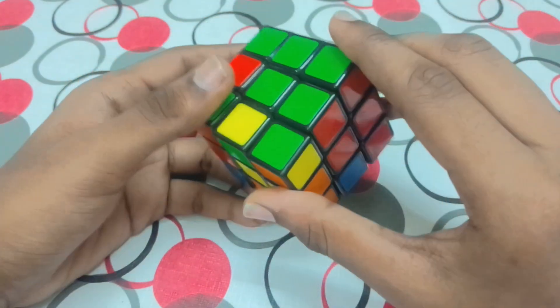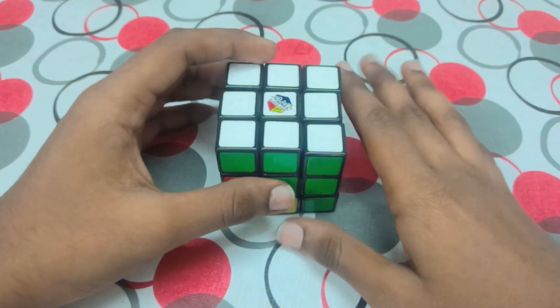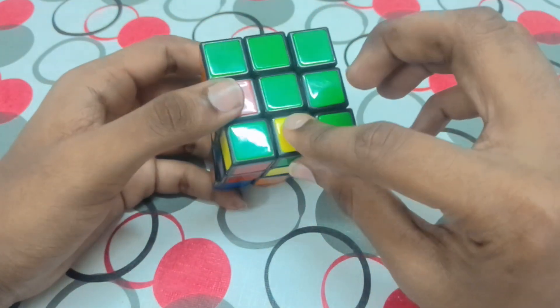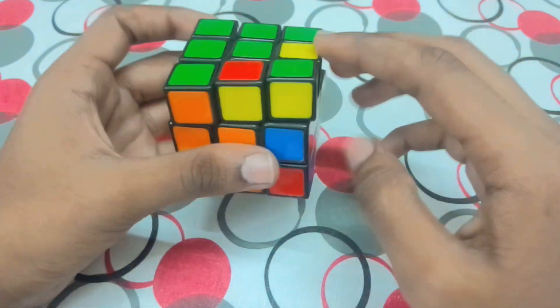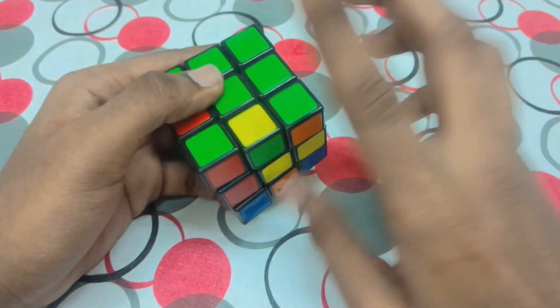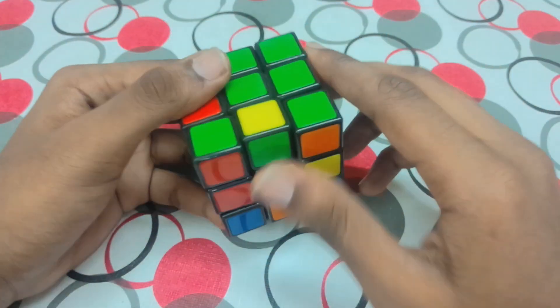So for that, you have to search for a middle bit because we are going to fill a middle bit like this. Search for a middle bit that shouldn't consist any yellow color.